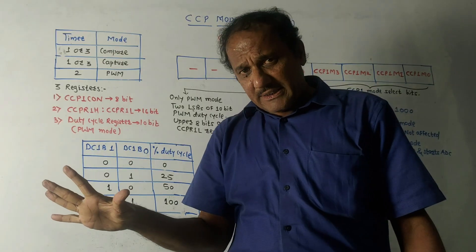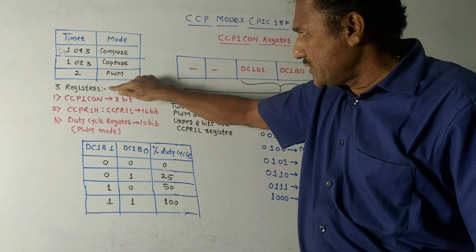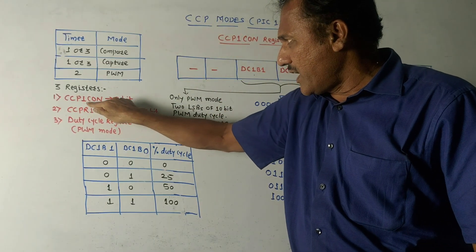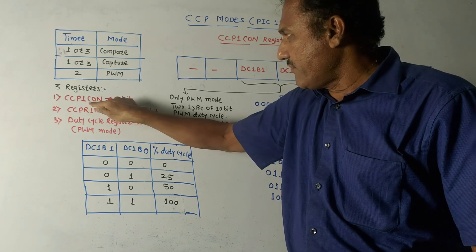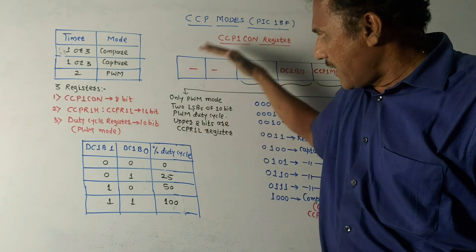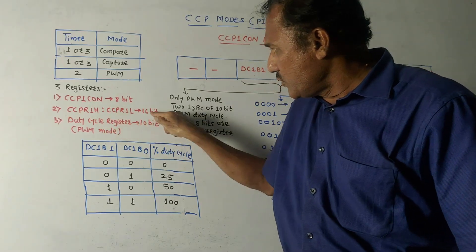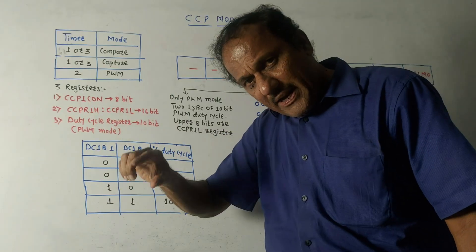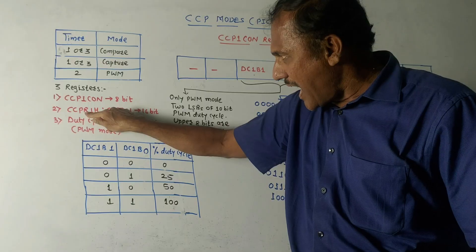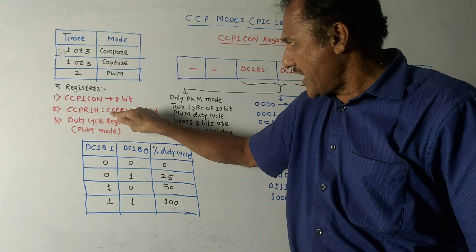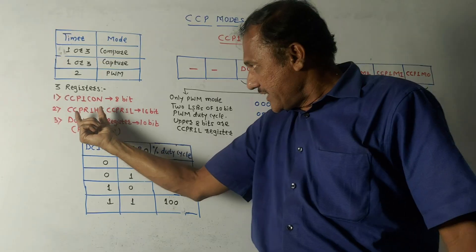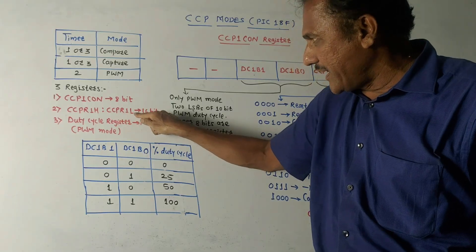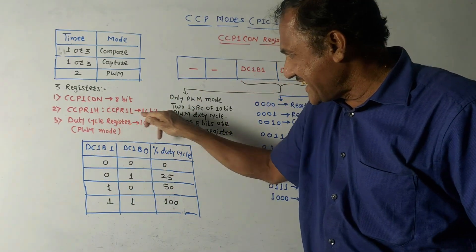For programming or general explanation, we will be using three registers for CCP modes. First is the CCP1 control register — an 8-bit register. Second is the CCPR compare and capture register, which has CCP1H and CCP1L: 1H represents the higher 8 bits, 1L represents the lower 8 bits, giving a total combination of 16 bits.